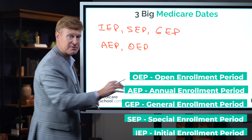The three big Medicare mistakes revolve around this letter, given the acronym ANOC — Annual Notice of Change. The first mistake is that sometimes people do not receive it. Insurance companies are supposed to mail this during September, and it should be in your possession no later than October 1st. Sometimes people don't receive their ANOC because they've moved or there's another issue.